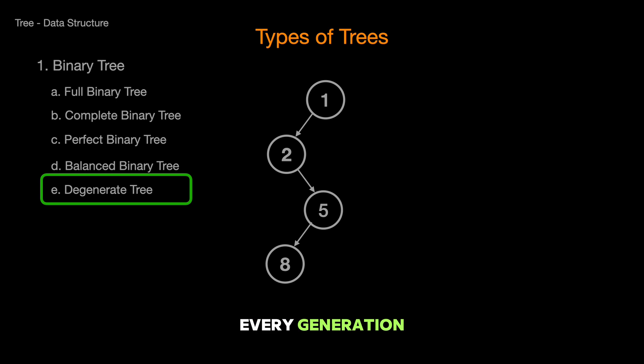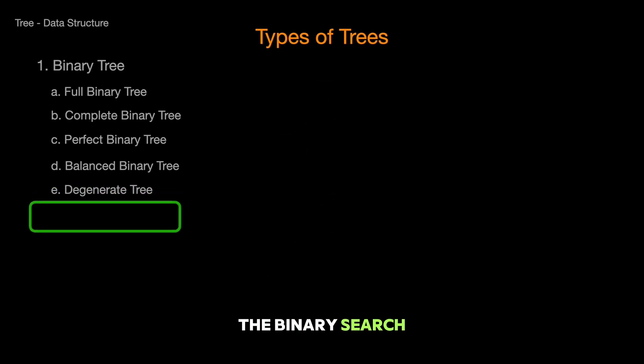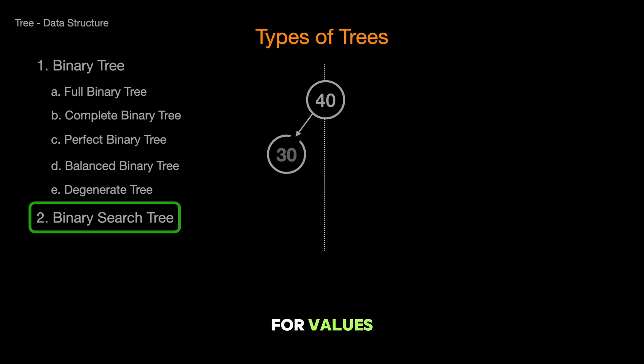Now, let's take a turn into a more specialized neighborhood, the binary search tree, or BST for short. BSTs are all about order. They make searching for values swift and efficient. In a BST, all the nodes to the left of a parent are smaller, and all nodes to the right are larger. It's like a filing system where everything's sorted from smallest to largest for quick access.